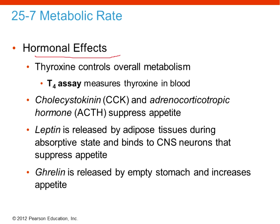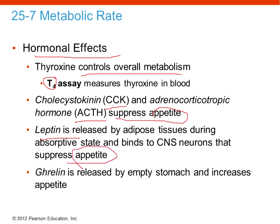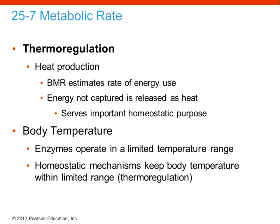There are hormonal effects on overall metabolic rate. T3 and T4 are thyroid hormones that control overall metabolic activity — levels of these relate to hyperthyroidism and hypothyroidism. CCK and ACTH are also known to suppress appetite. Leptin is released by adipose tissue as an appetite suppressor, released once the stomach is getting full, though attempts to use synthetic leptin to reduce hunger were not very promising.